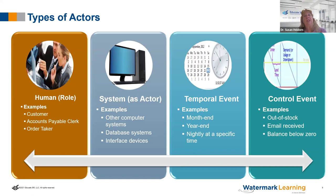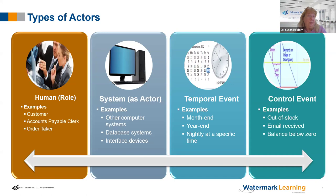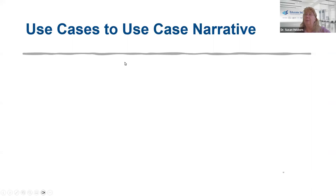Think of an ATM machine — it just stays there in sun, rain, and snow until you trigger it to wake up. You put in your card and it asks, 'What would you like?' It's always triggered by an actor. That is the relationship, the conversation between the system and the person or actor — which could be anything. Something triggers the system to act; that is what an actor is.